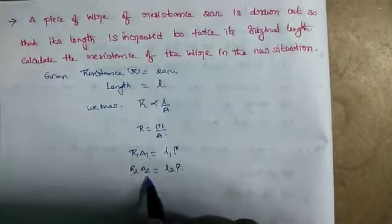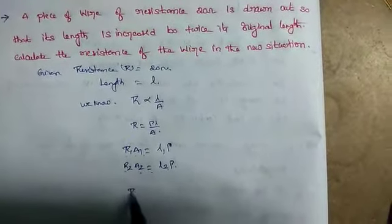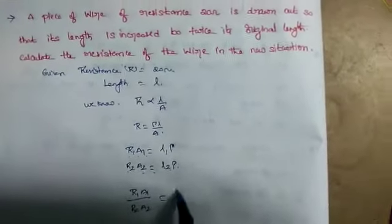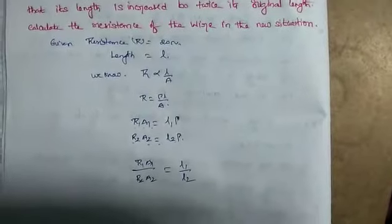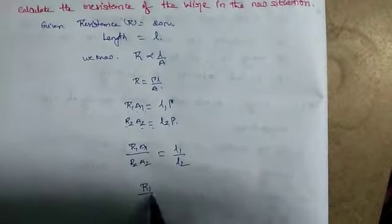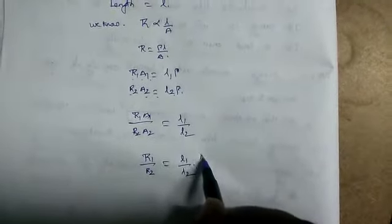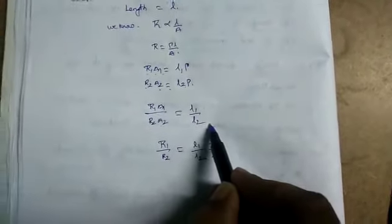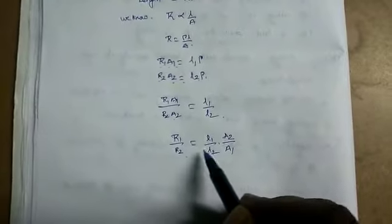From the ratio: R1·A1 divided by R2·A2 equals l1 divided by l2. Therefore, R1 divided by R2 equals l1 divided by l2 multiplied by A2 divided by A1. We need to find A2 by A1 using the volume constraint.